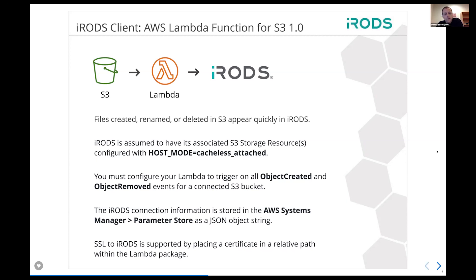You must configure your Lambda to trigger on all of the object created and object removed events defined by Amazon — we want to pick up all of those so we can keep the catalog up to date. This is an iRODS client, so you have to have the zone name, username, and all that kind of stuff, just like other client configurations. Those live in the parameter store — that's where you put your secrets and how the client would pick up credentials to talk to iRODS. If you have SSL turned on with iRODS, this can handle it through the Python library, and the certificate you need would be placed in the Lambda package alongside the function as a relative path. We originally had it somewhere else, but there's a limit to the size of key values you can put in the parameter store, so if you have a long certificate chain, this was the right answer.